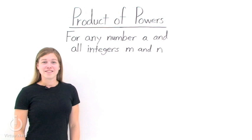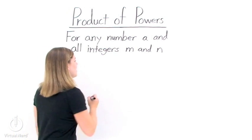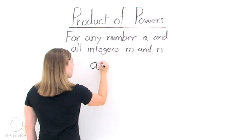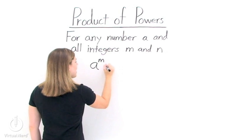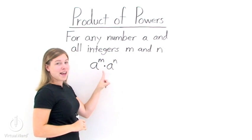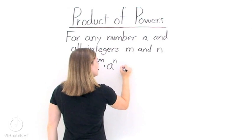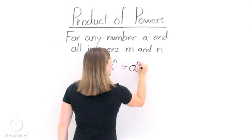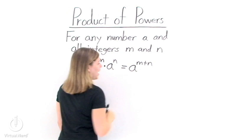What is the product of powers? The product of powers states that if we have any number a and two integers m and n, then a to the m times a to the n is the same thing as a to the power m plus n.